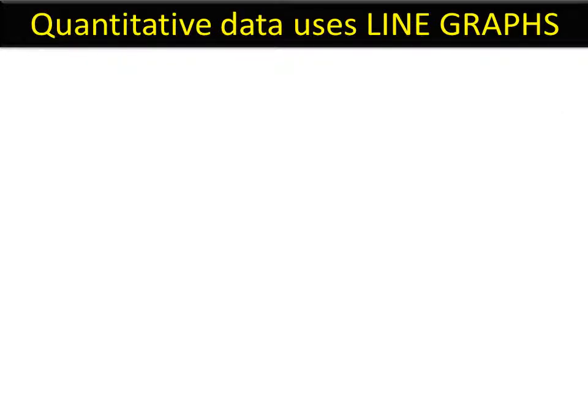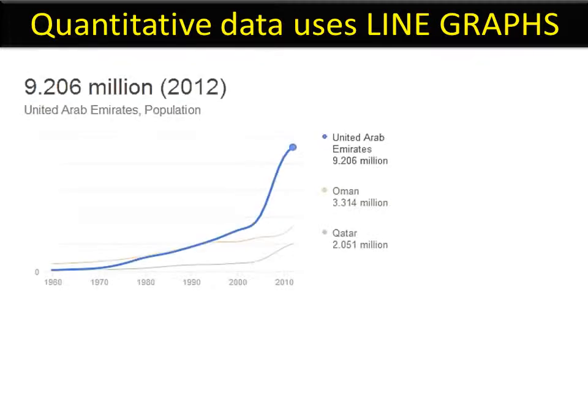Quantitative data is viewed in line graphs, because sometimes looking at a whole lot of numbers on a table can be quite difficult. So we like to show things on a graph so we can see what's happening over time. For example, this is the population of the UAE since 1960 to 2010. It's risen to 9.2 million in 2012.